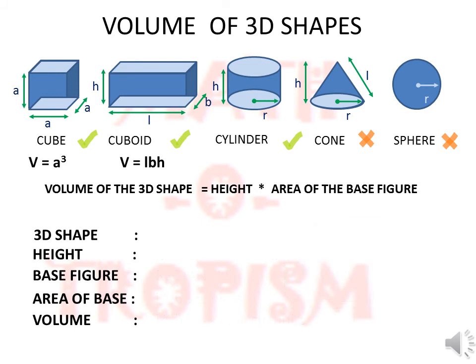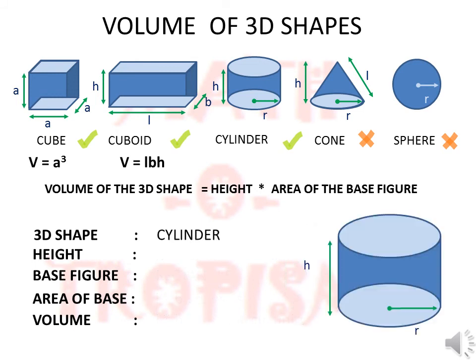Similarly for the cylinder. What is the volume of a cylinder? This cylinder has a height of h and the radius of the circle at the bottom and top face is r. The volume will be height...